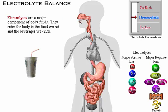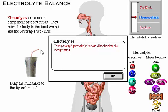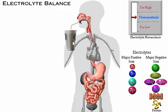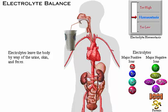Electrolytes are a major component of body fluids. They enter the body in the food we eat and the beverages we drink. While electrolytes leave the body mainly through the kidneys by way of the urine, they also leave through the skin and feces.